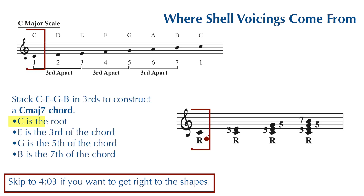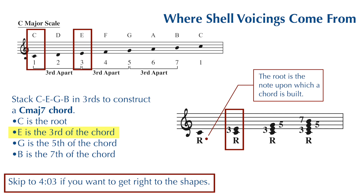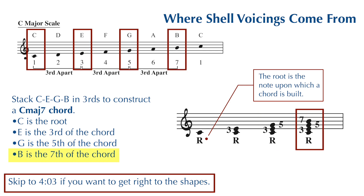We can stack these notes up. We'll start with C, which we're going to call the root note because this is the note we're using to build our chord. We stack an E on top — now we have a root and a third. E is the third note of the C major scale. Then we stack a G, which is the fifth. And finally, we stack a B, the seventh. What we have now is a C major seven chord.